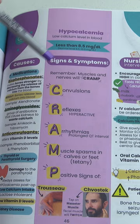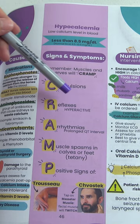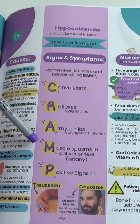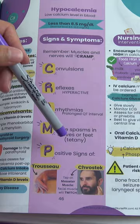C is for convulsions, R is for reflexes hyperactive, A is for arrhythmias — particularly prolonged QT intervals, M is for muscle spasms in calves and feet, known as tetany, and P is for positive signs of Trousseau's and Chvostek's.